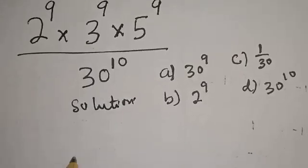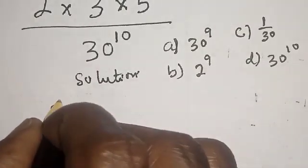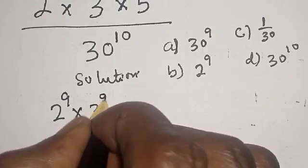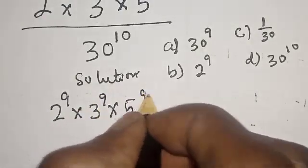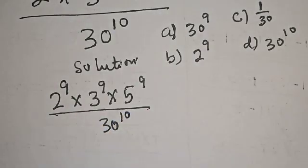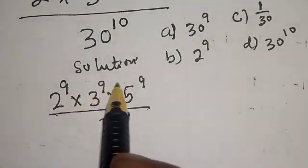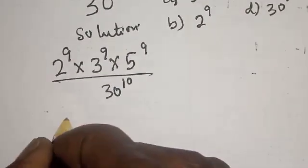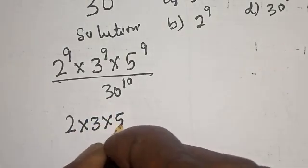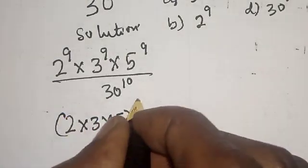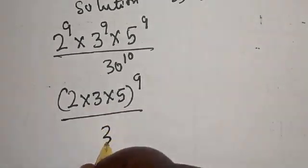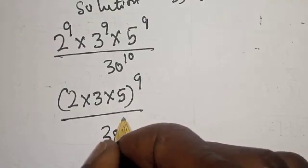Solution. We have 2 raised to power 9 multiplied by 3 raised to power 9 multiplied by 5 raised to power 9, divided by 30 raised to power 10. Now, the power of 9 is common. This becomes 2 multiplied by 3 multiplied by 5, raised to power 9, divided by 30 raised to power 10.